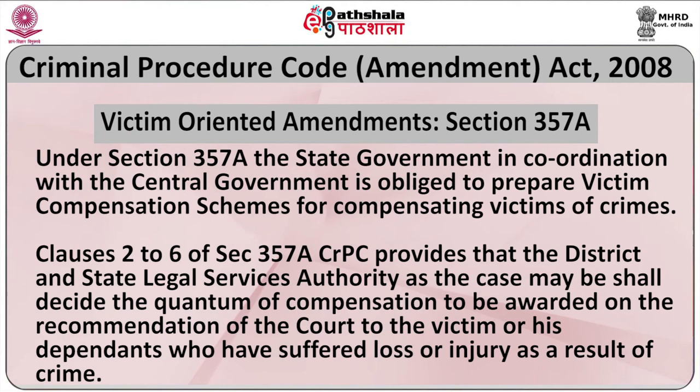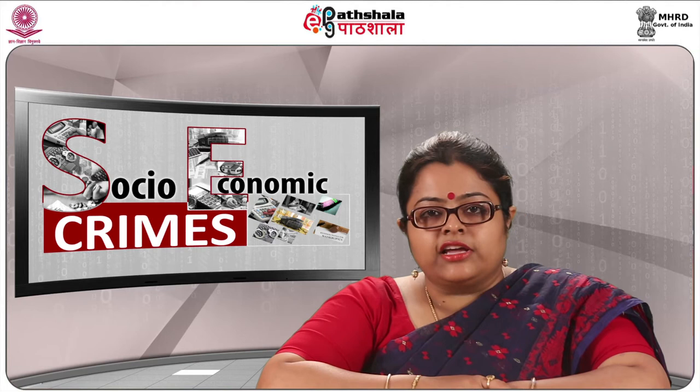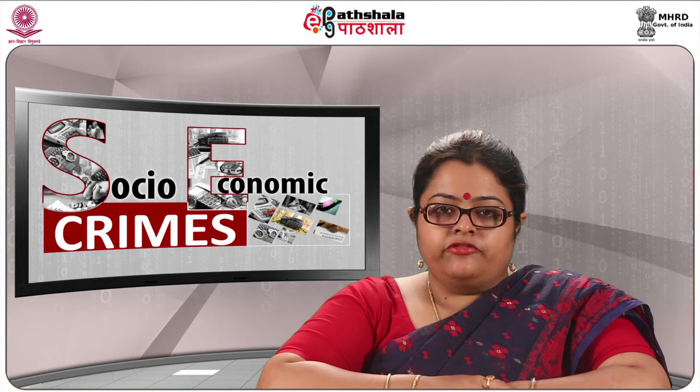Under section 357A, the state government, in coordination with the central government, is obliged to prepare victim compensation schemes for compensating victims of crimes. Clauses 2 to 6 of section 357A CRPC provide that the district and state legal service authority shall decide the quantum of compensation to be awarded on the recommendation of the court to the victim or his dependents who have suffered loss or injury as a result of crime. The district and state legal service authority, in order to alleviate the suffering to the victim, may provide immediate first aid facilities or medical benefits and award adequate compensation.